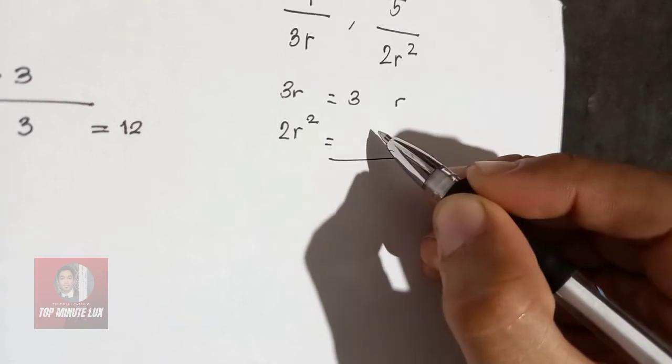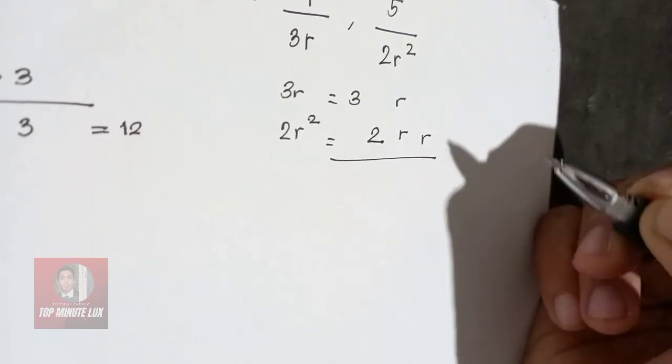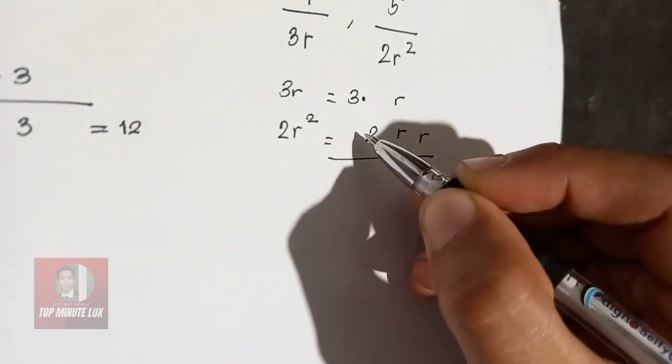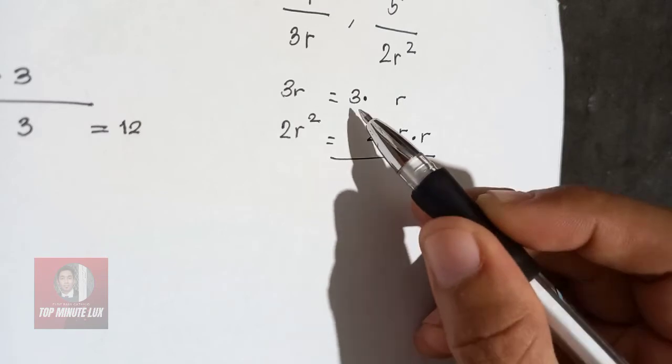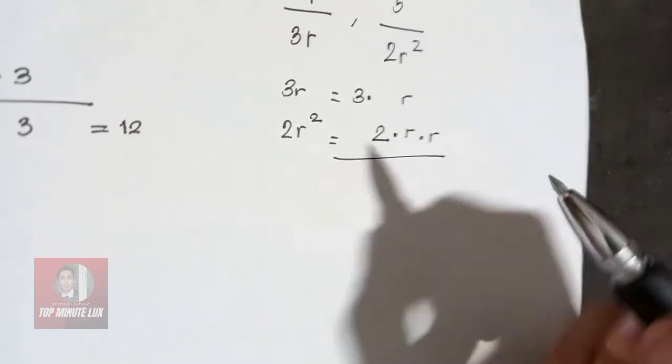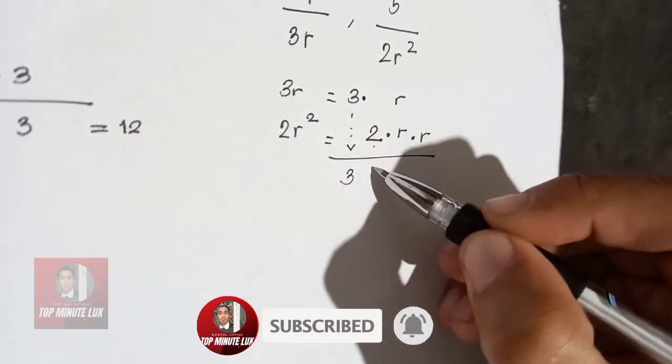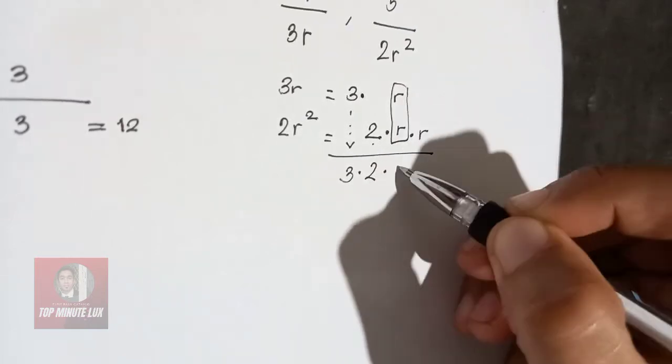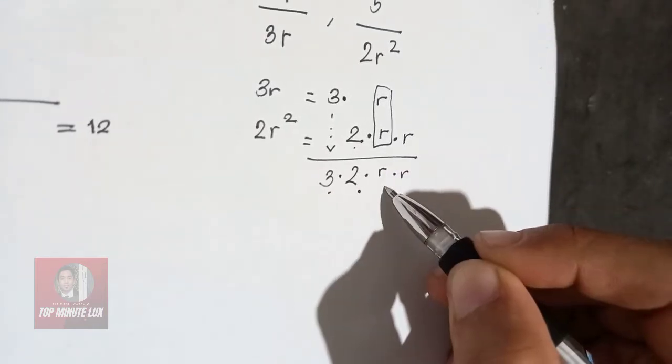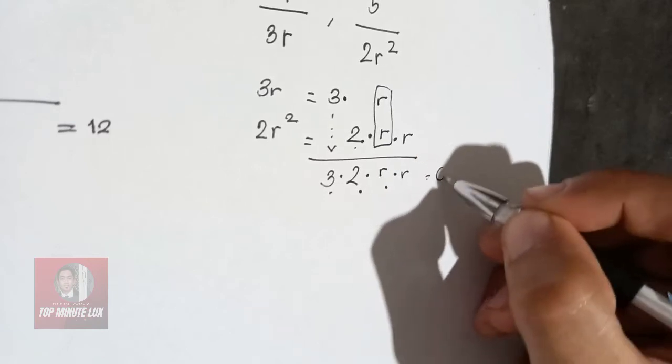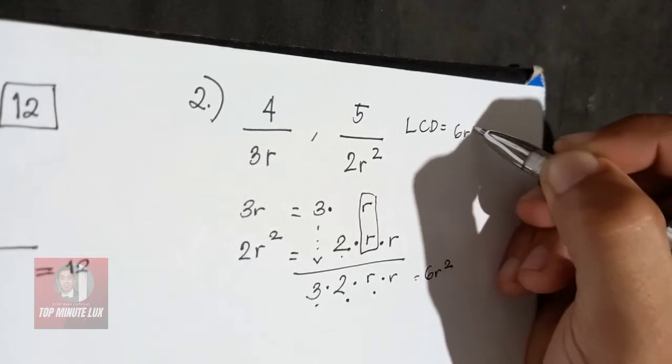2R squared. So separate 2 with R with another R. So in order to avoid confusion, let's place that dot, dot. So it is just simply a breakdown of the numerical, of the constant, and the variable. So bring down 3. The common, bring down 3 and also bring down 2. Then the common of the 2 is R and also bring down R. So multiply, 3 times 2, 6, times R, 6R, times another R will give you 6R squared. So the LCD is 6R squared.